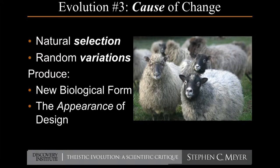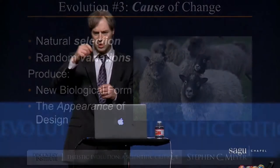According to neo-Darwinism, the cause of change is the mechanism of natural selection acting on random variations — a particular kind of variation called a mutation — which is a random change in the sequence of characters in the DNA message, the genes, or the information stored in the DNA.